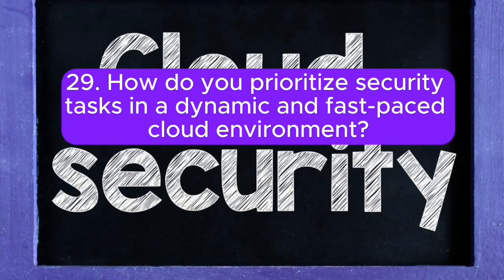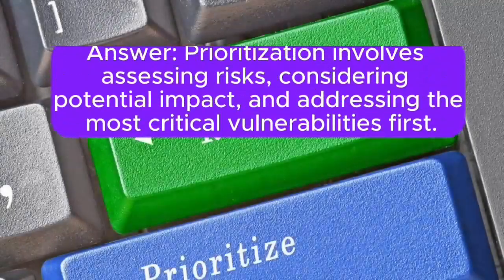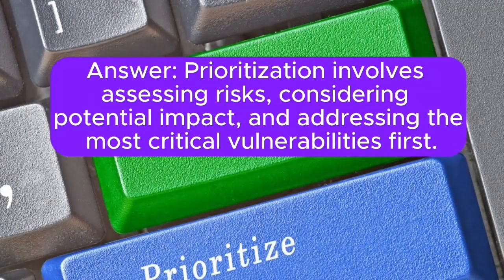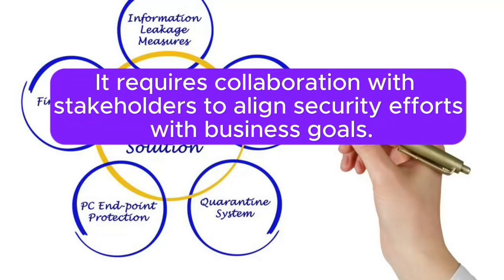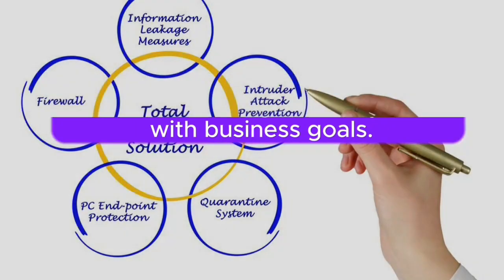29. How do you prioritize security tasks in a dynamic and fast-paced cloud environment? Prioritization involves assessing risks, considering potential impacts, and addressing the most critical vulnerabilities first. It requires collaboration with stakeholders to align security efforts with business goals.